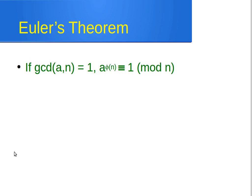Euler's theorem states that if GCD(a, n) = 1, then a raised to the power phi(n) is congruent to 1 mod n. I'll come back to this in my next video. Thank you very much for watching and I'll see you next time.